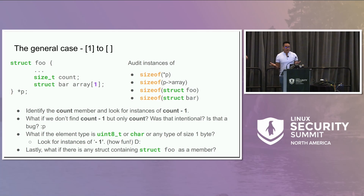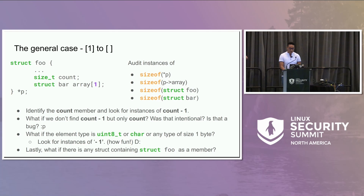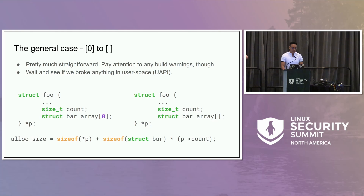Transforming zero-length arrays into flexible array members is more straightforward. We can simply remove the zero from the declaration — that's basically it. However, we sometimes break user space. There is a Coccinelle script we use to transform the vast majority of zero-length arrays into proper C99 flexible array members. It's a fairly simple script: identify the structure containing the array and remove the zero from the declaration.